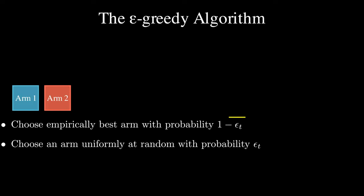At the third round, we know that with probability 1 minus epsilon, we choose the empirically best arm. And with probability epsilon, we choose an arm at random.